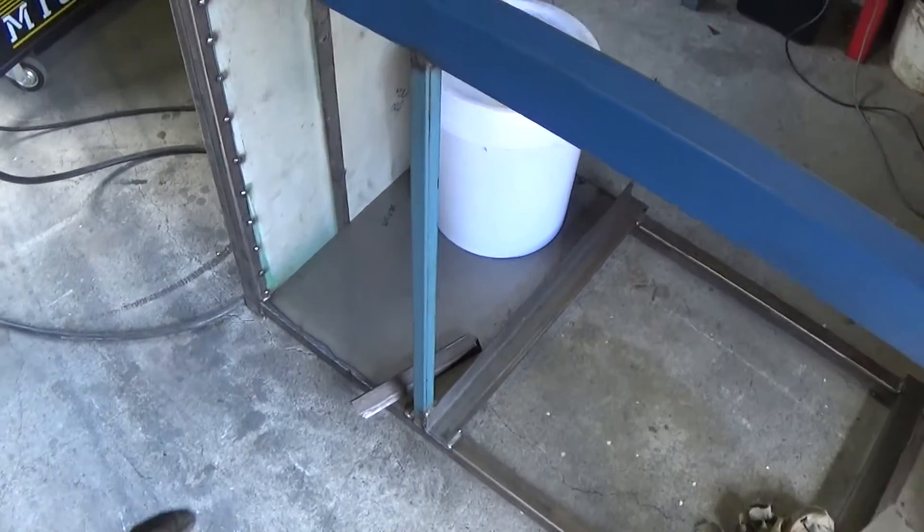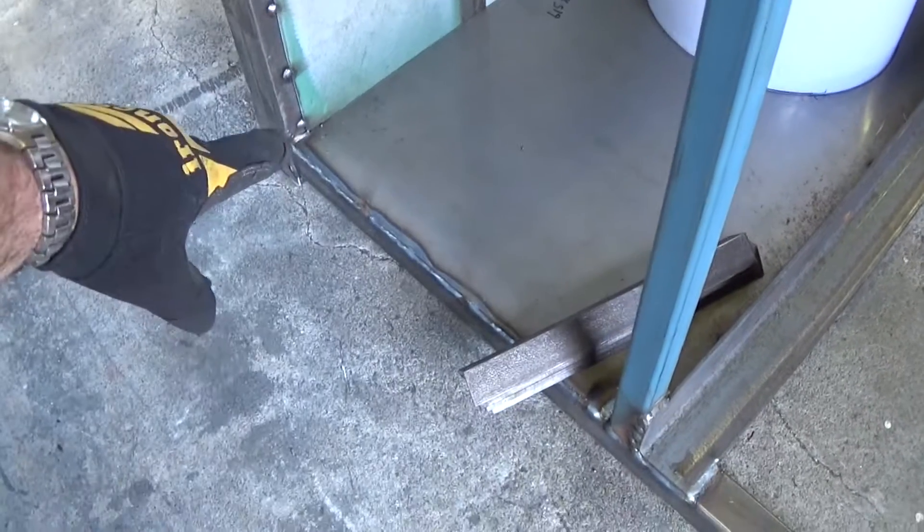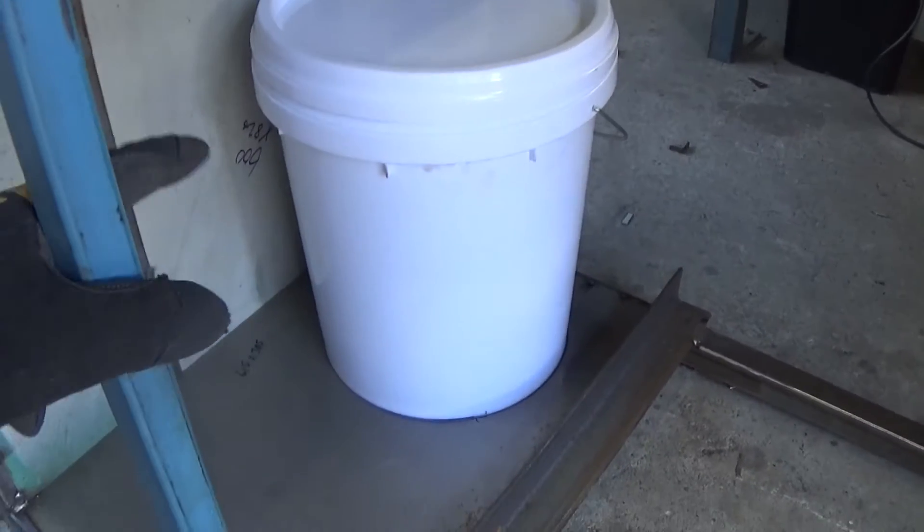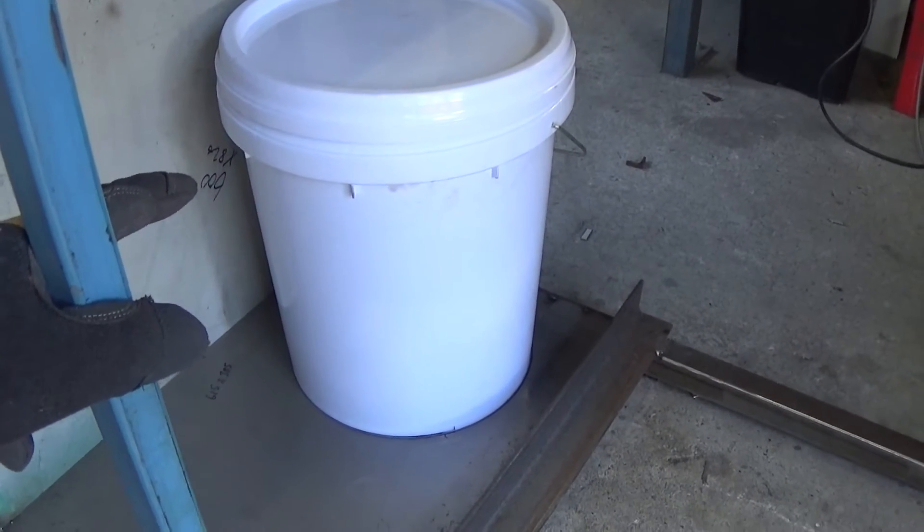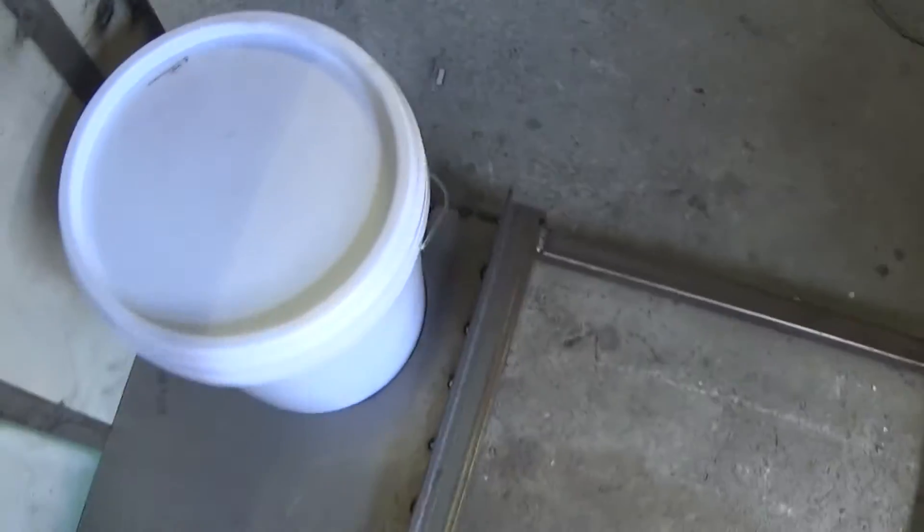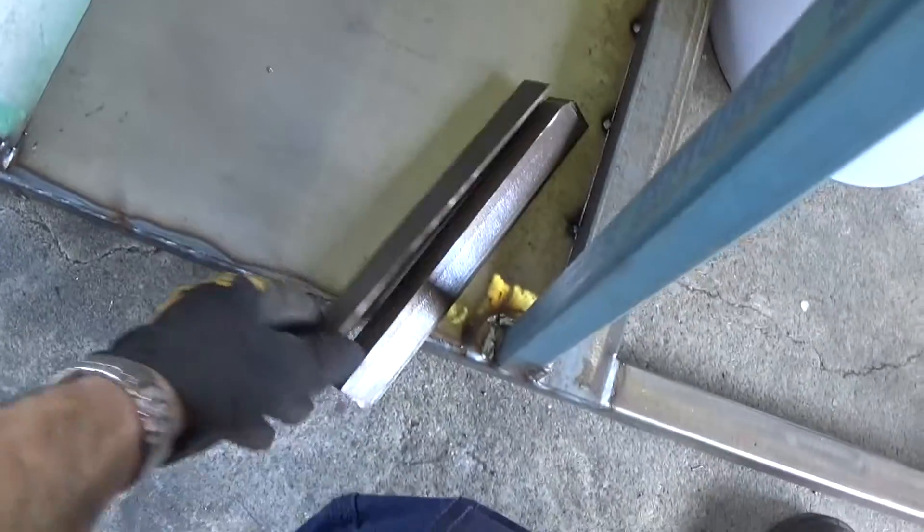Okay so I've chopped up some three millimeter or roughly one eighth steel plate for the base and I've just set my bucket which will be the coolant bucket, there'll be a pump sitting in the bottom in the cavity towards the back so there's not much of a gap in the back there.